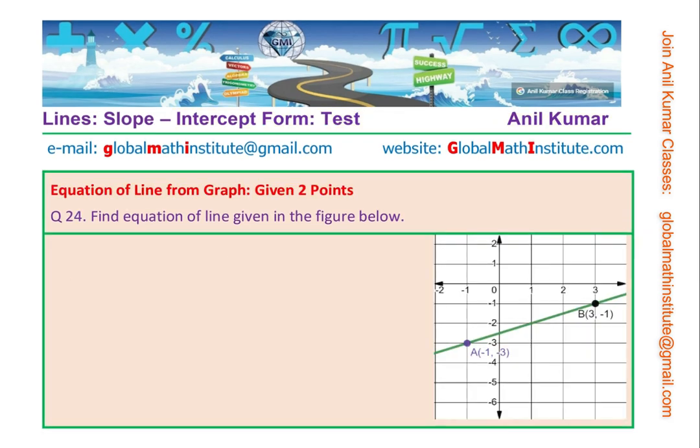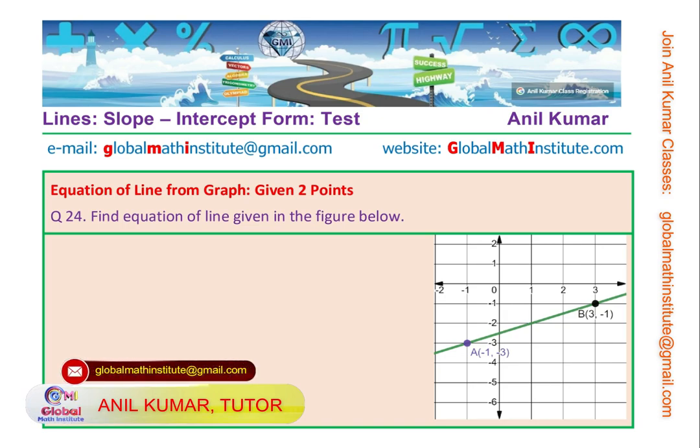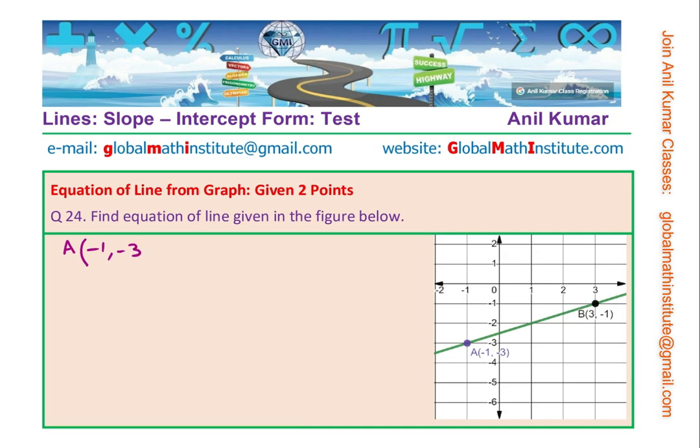Here is another one for you to practice. So I'd like you to pause the video now. We are given a line, two points. Identify the points. So we are given actually the coordinates of points this time, A being minus 1 minus 3, and coordinates of point B are given to us as 3 and minus 1.